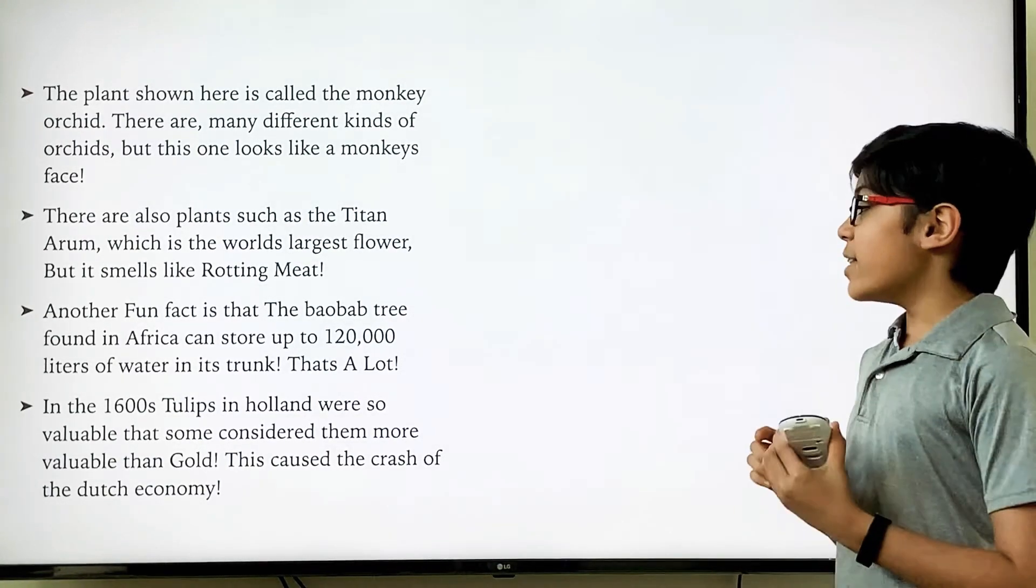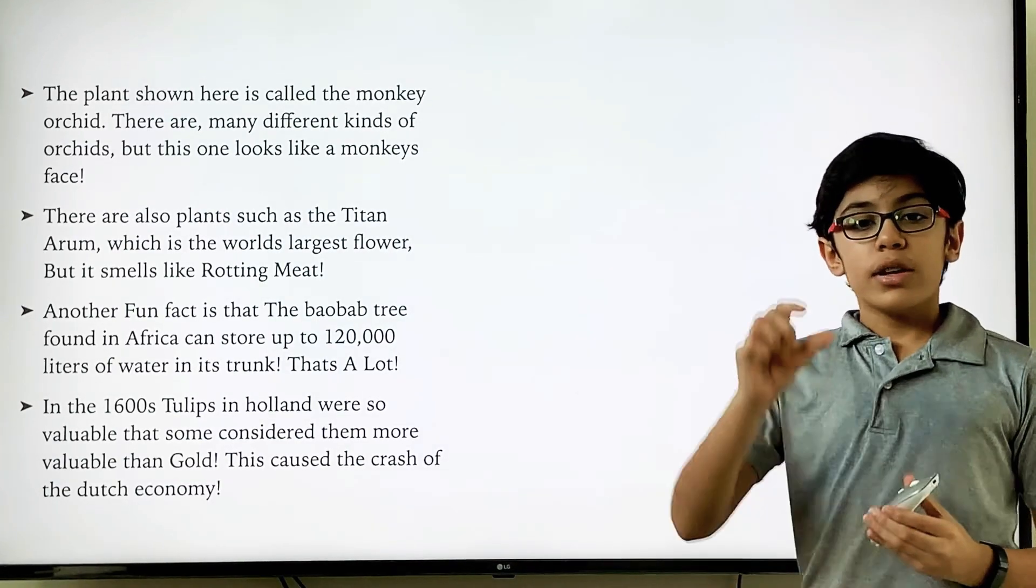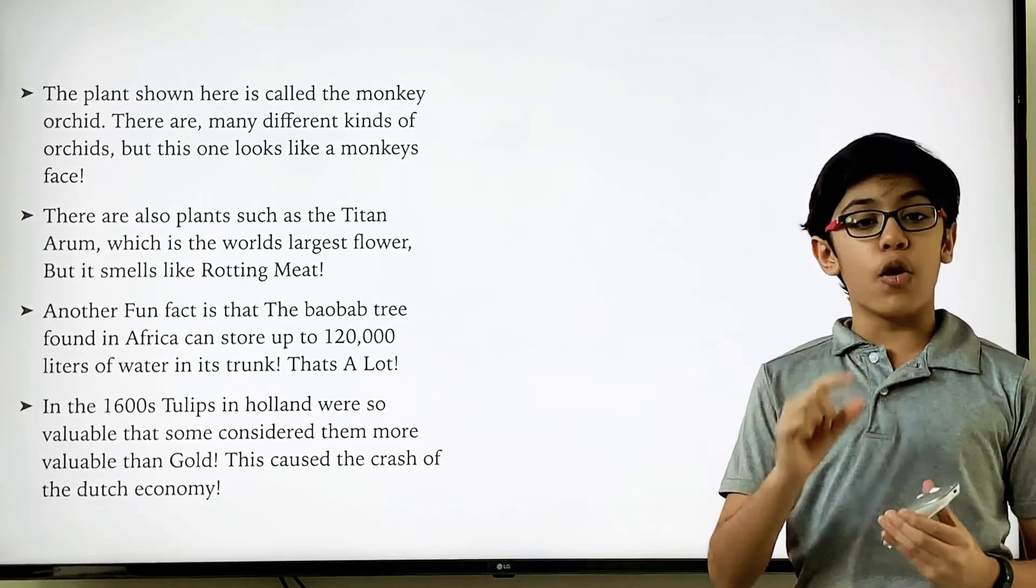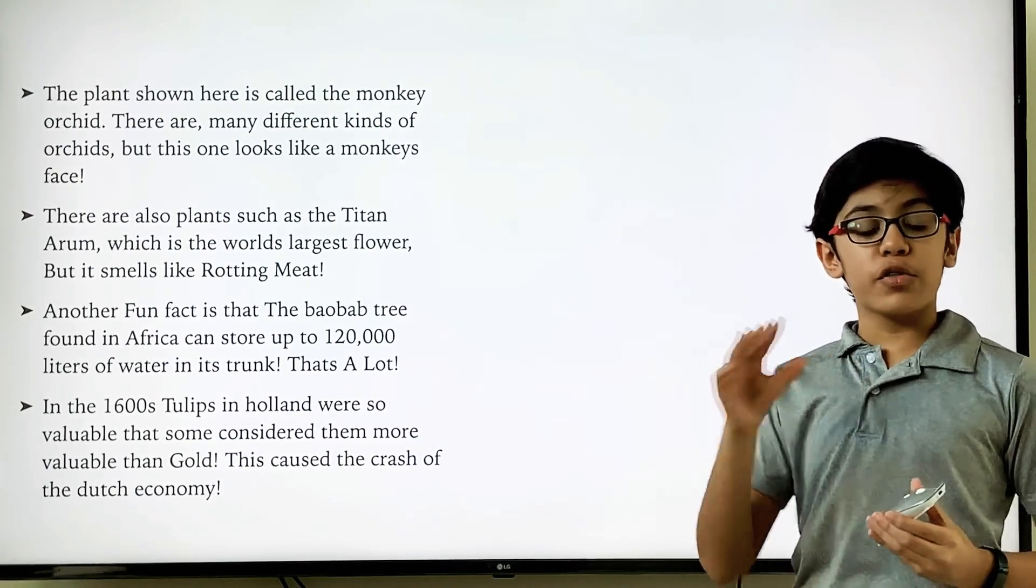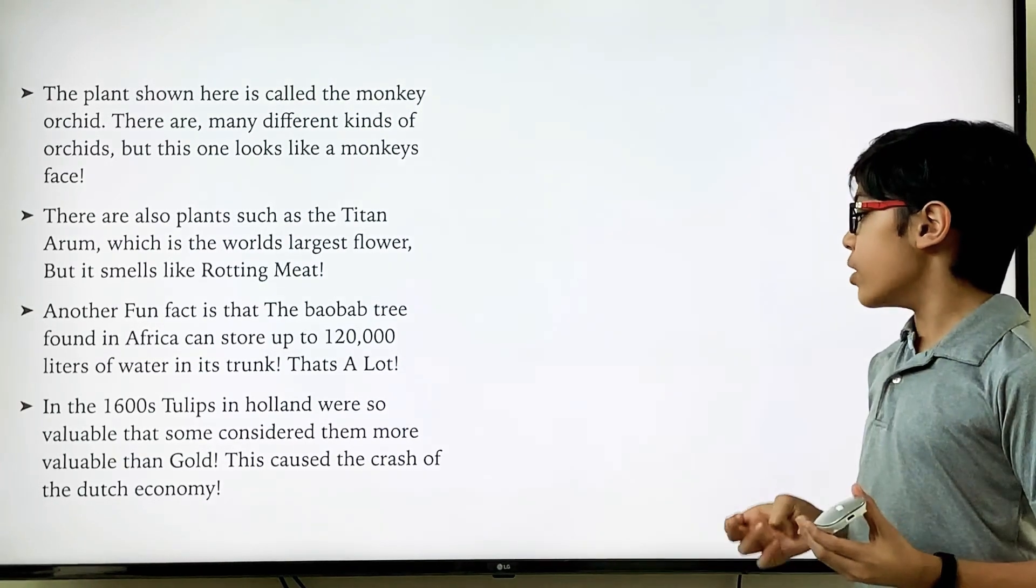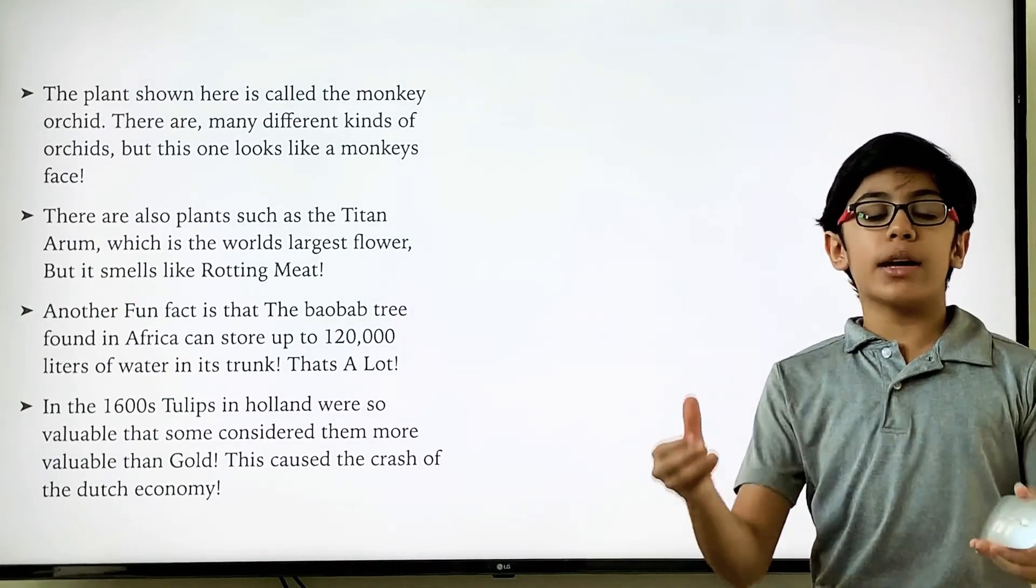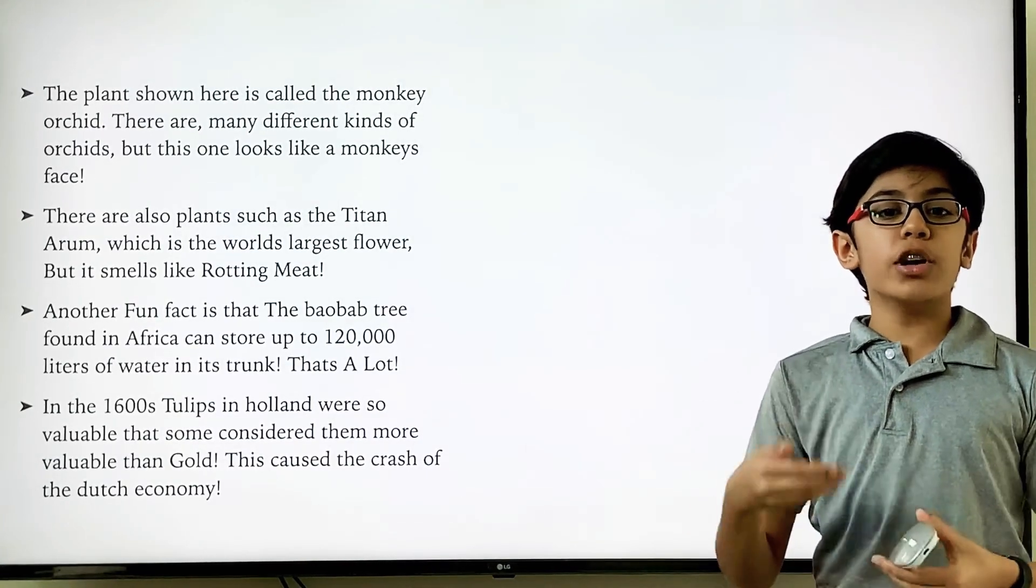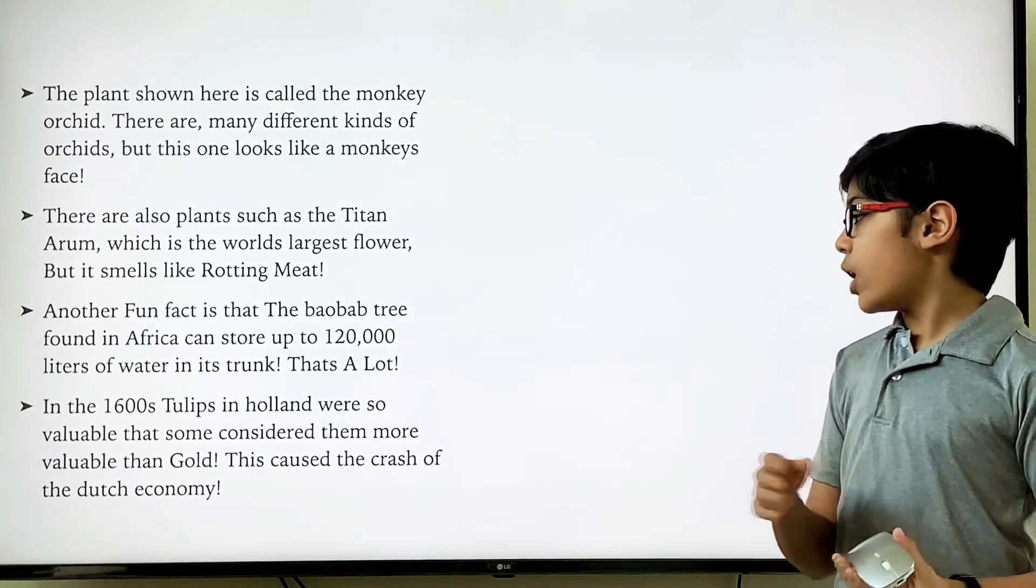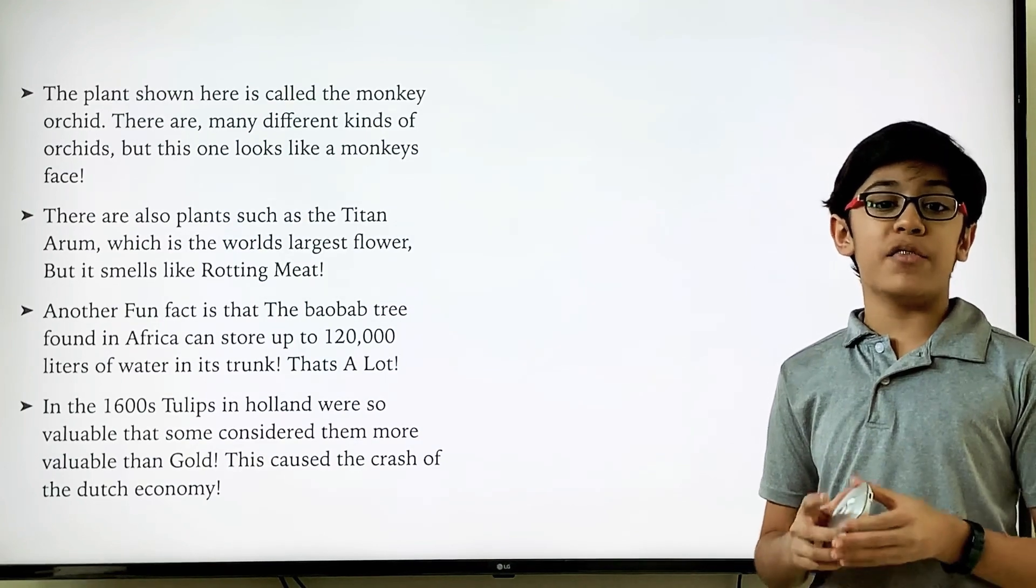Another fun fact, in the 1600s, tulips in Holland were so valuable that certain rare bulbs were worth more than their weight in gold. People from all around the world flocked to buy these, and as a result, the economy of the Dutch literally just collapsed. Because so many people were spending money on flowers that weren't really worth their value, they were just pretty, that their entire economy just collapsed. And they went into a recession that they didn't come out of for a very long time.